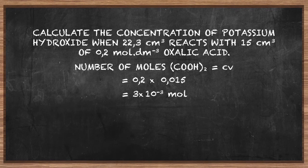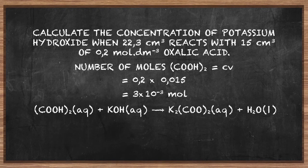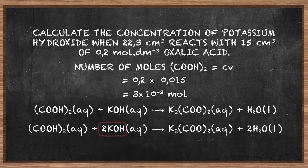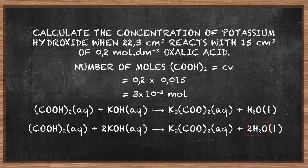Step 2: write the balanced equation for the reaction. Oxalic acid reacts with potassium hydroxide to produce potassium oxalate and water. Check that the equation is balanced — we need two atoms of potassium in the reactants, so insert a 2 in front of KOH. Then insert a 2 in front of H₂O in the products. One more check — yes, the equation is balanced.